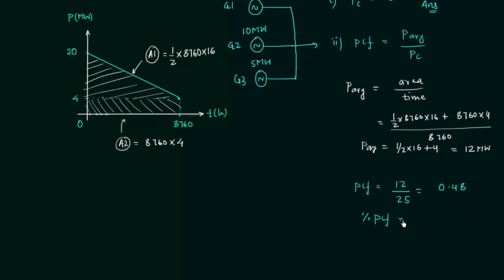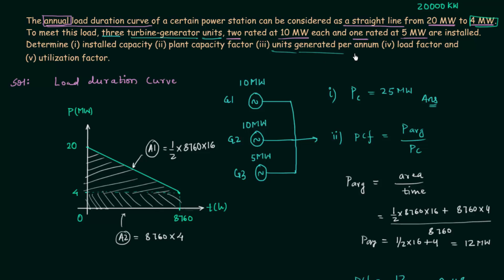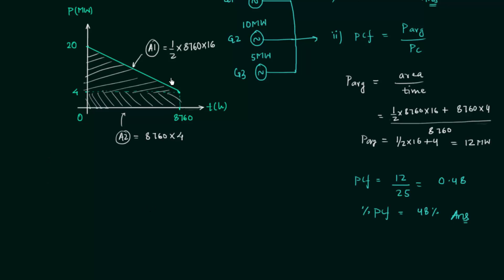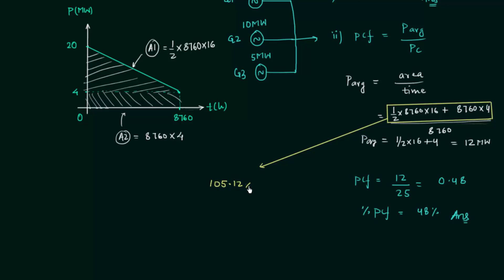Now for the third part: units generated per annum. This is simply the area under the load duration curve, which is the numerator in the average power expression. When you solve it, the total energy produced in one year is 105.12 × 10³ MWh.